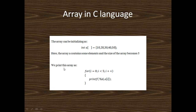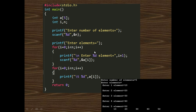We can print the array using a for loop: for(i = 0; i < 5; i++) then print using printf with %d format specifier as a[i]. This prints the values 10, 20, 30, 40, 50.